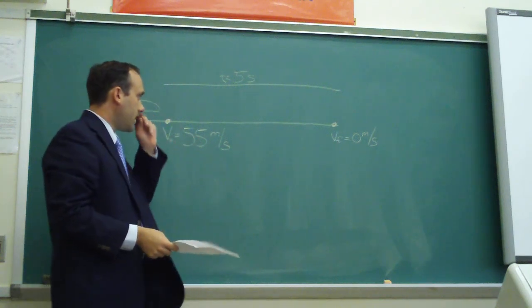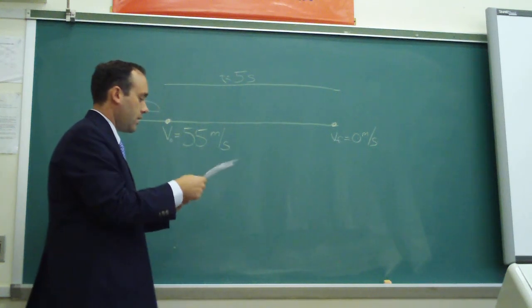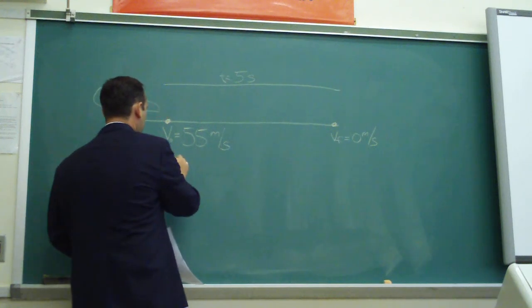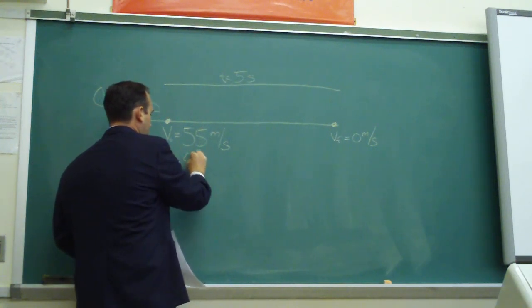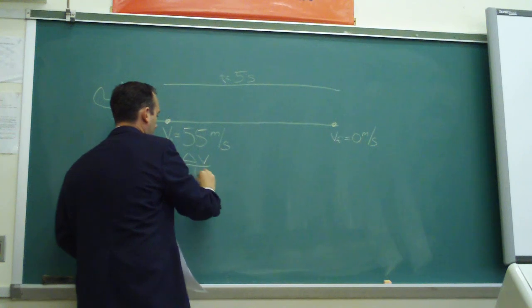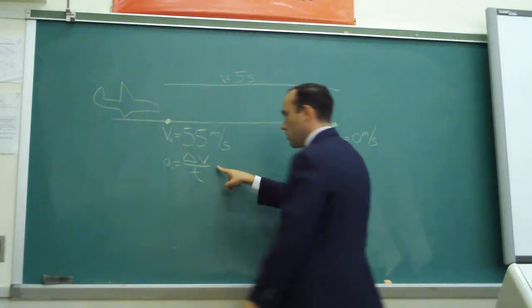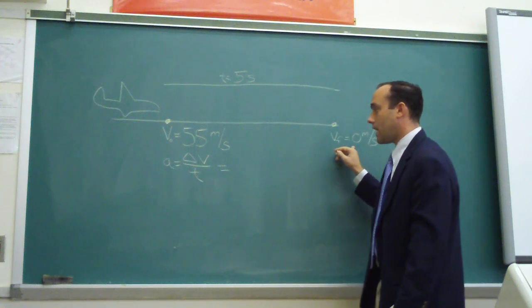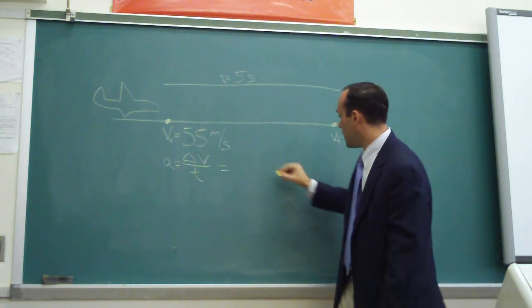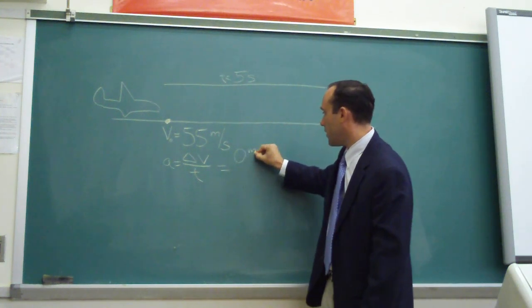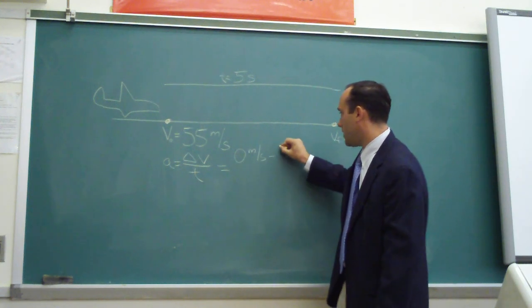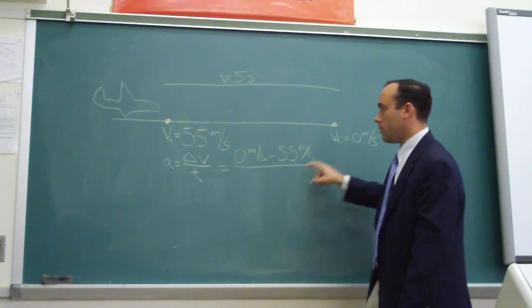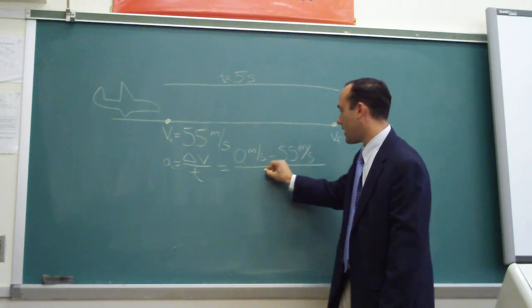We can find the change in velocity by comparing the final velocity and the initial velocity. We have a formula that deals with acceleration: a equals change in velocity over time. Change in velocity can be expressed as the final velocity minus the initial velocity. So you have zero meters per second minus the initial velocity of 55 meters per second, and the time that it took was five seconds.